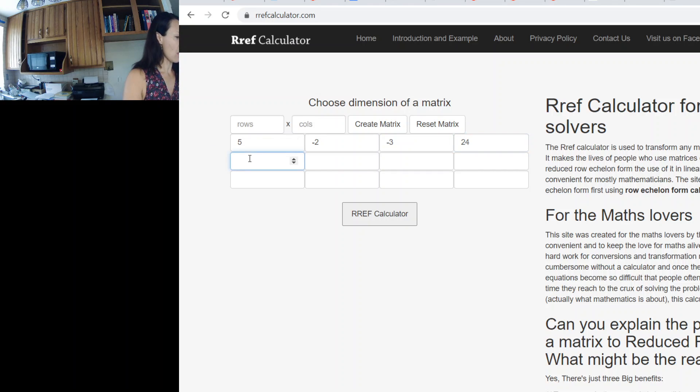For the next row, we have 4, and then 5, and 0, and that's equal to 0. And then we have 3, and negative 6, and negative 4, and that's equal to 0.